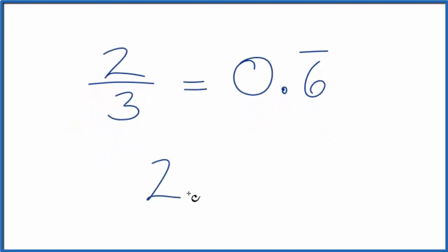In essence, we're dividing 2 by 3, and we get 0.6 repeating. Let's do this division longhand.